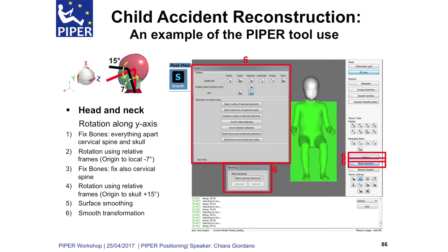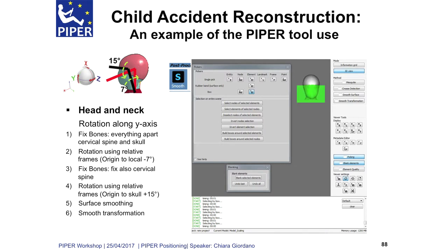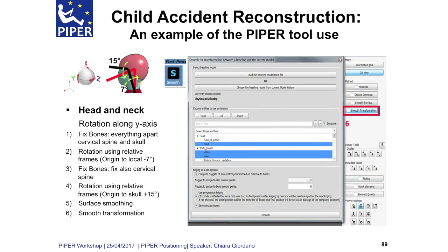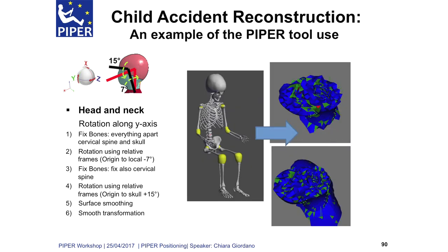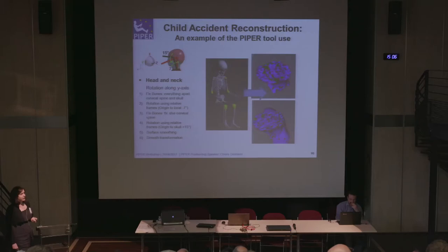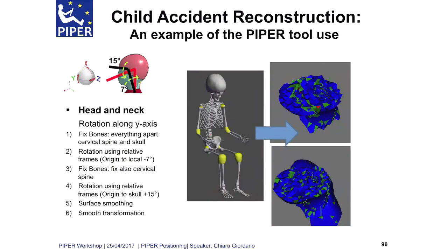Following that, I need to do some volume element smoothing, so I click on smooth transformation. I pick the part of the model I'm interested in by clicking on picking, select the elements, blank what I'm not interested in, and get the head model. I then select what I'm interested in, click on smooth transformation, and select the bones and flesh — skull, cervical spine, and flesh of the head — and smooth. The smoothing takes around five minutes but is reasonably fast. You can see the results before and after: the color code shows element quality, and the red ones had negative volumes — unacceptable quality — before. After smoothing, there are no elements with unacceptable quality, so the smoothing worked pretty well.